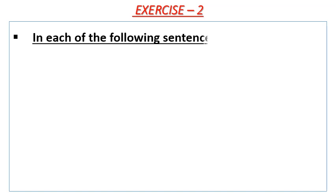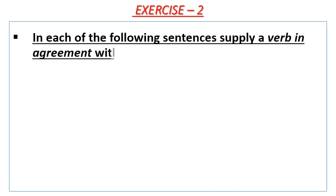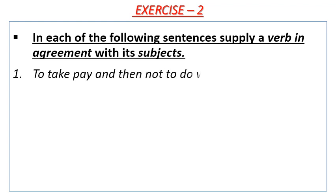Exercise No. 2: In each of the following sentences, supply a verb in agreement with its subjects. No. 1: To work—dishonest. Answer is 'is'. Reason is, a compound subject comprising form of two or more nouns or pronouns joined by and requires a plural verb.